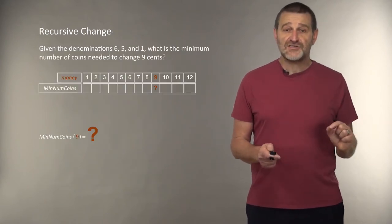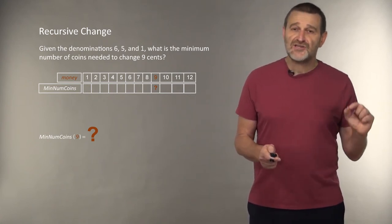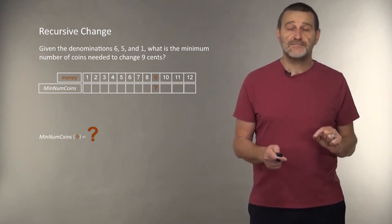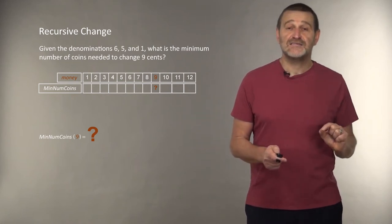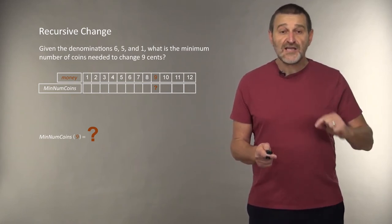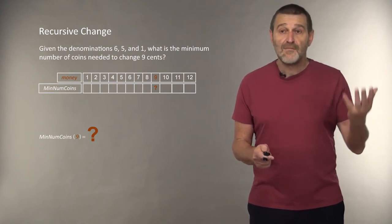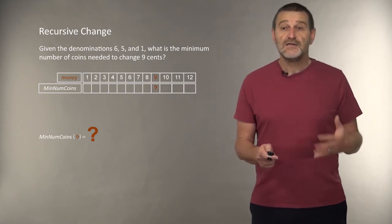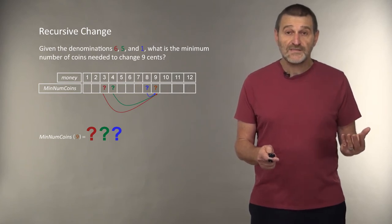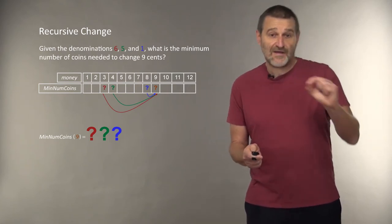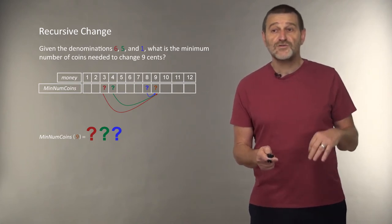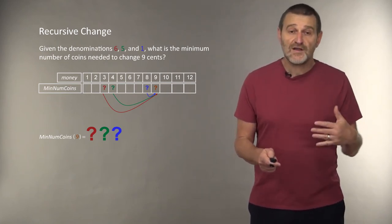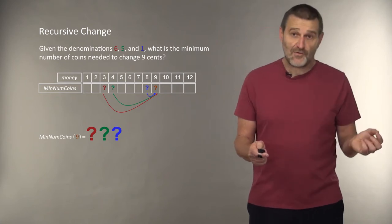Let's design a recursive change algorithm. And let's imagine that we are in a strange country where there are only three coins: six cents, five cents, and one cent. How would we change nine cents using these coins? Well, to change nine cents, to find the optimal minimum number of coins to change nine cents, we can find the minimum number of coins to change eight cents and add one penny. Or, the minimum number of coins to change four cents and add a five cents coin, one more coin. Or, to find the minimum number of coins to change three cents and add one more coin. And therefore, the minimum number of coins for nine cents is the minimum of the minimum number of coins for eight, four, or three cents plus one.